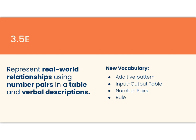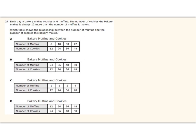So what do students already know about linear relationships by the time they get to sixth grade? Well in third grade they represented real-world relationships using number pairs and a table and verbal descriptions. That word number pairs, as they grow up they're going to start calling those ordered pairs, but for now in third grade they talk about number pairs and in third grade they're looking at specifically additive patterns. So let's look at what that looks like.